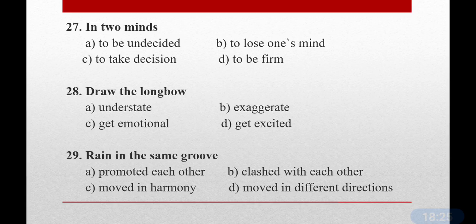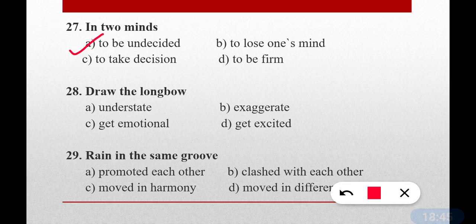Question number twenty-seven: In two minds. What is the correct meaning of this idiom? When your mind can't decide — you're unclear, going back and forth. In two minds means undecided — to be undecided. Option A is the correct answer.